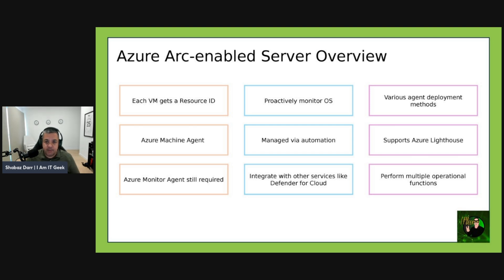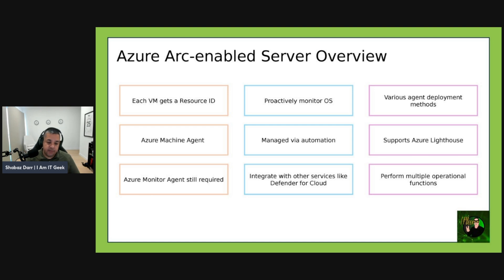When a hybrid machine is connected to Azure, it becomes a connected machine and is treated as an Azure resource. Each connected machine has a resource ID, enabling that machine to be included in whatever resource group you want, so you can manage it the same way you'd manage your Azure VMs.